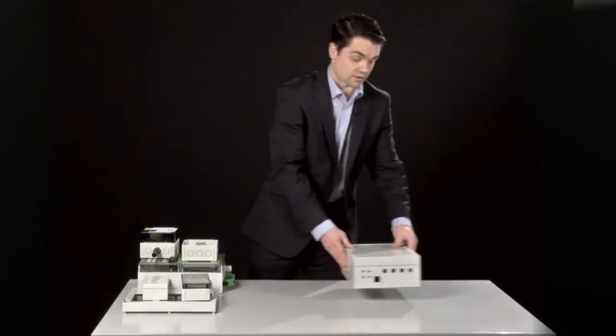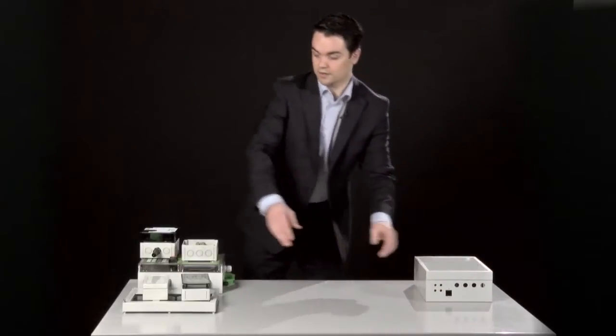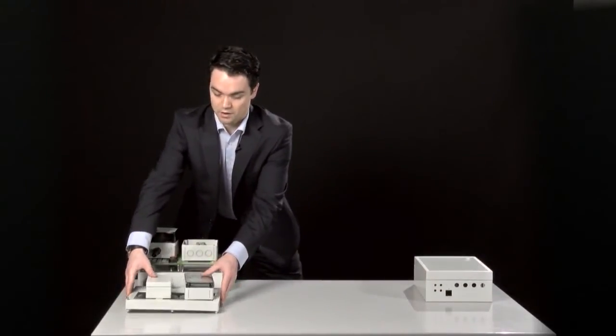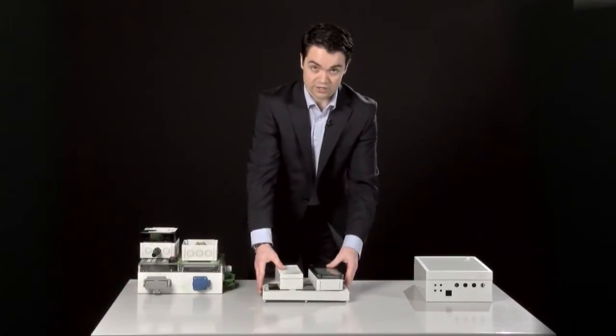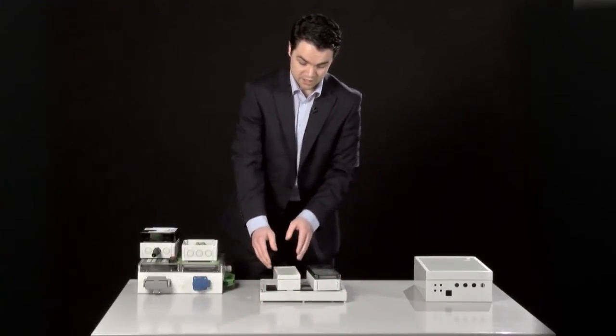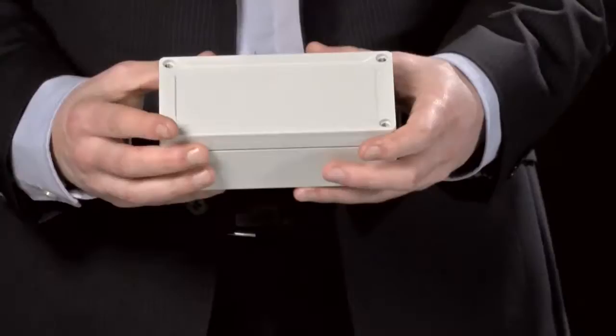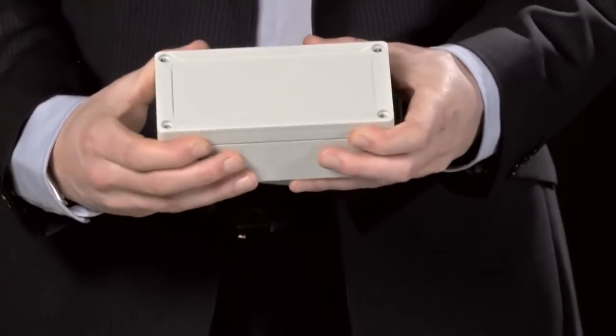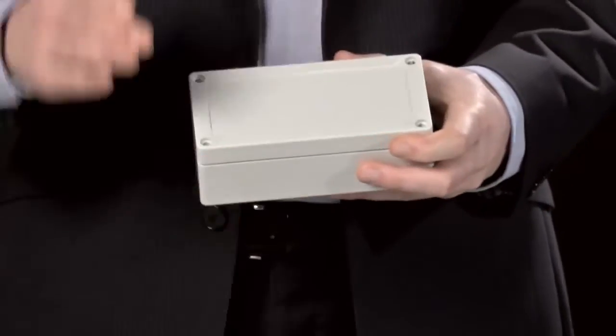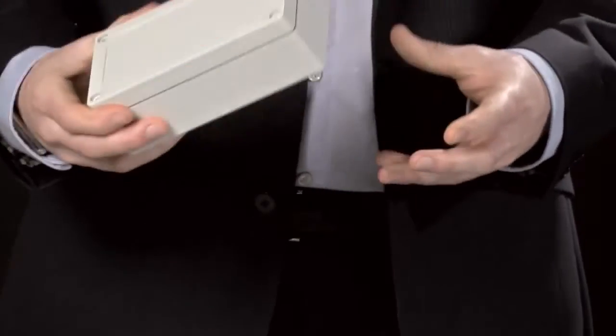Once your entry points have been decided, you may want to consider how the lid of your enclosure could be optimised for aesthetics or functionality. The TG range, for example, from Spellsburg, features a recessed lid which allows membrane keypads and labels to fit flush with the lid to prevent it from accidentally being knocked off.